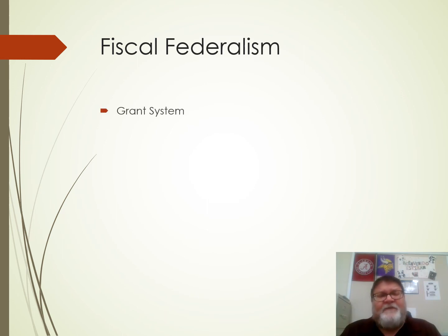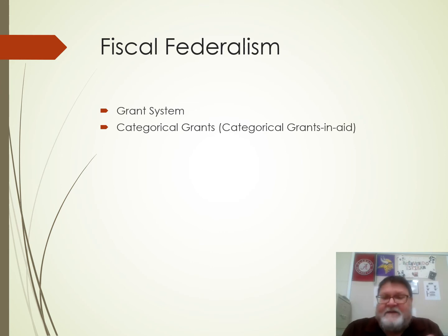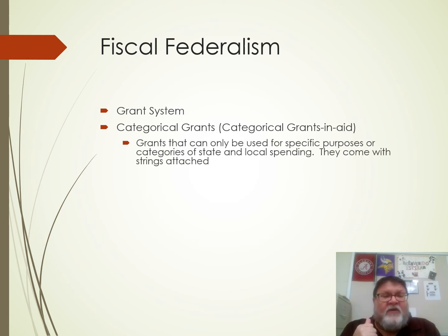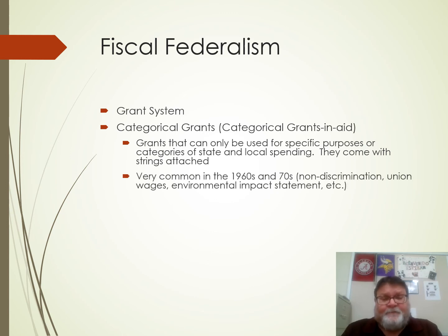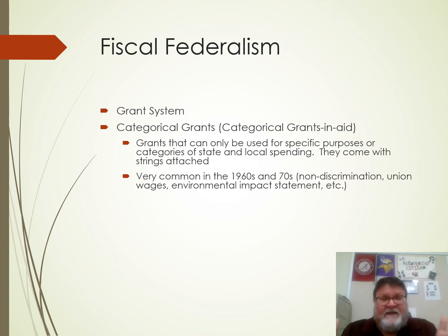Fiscal federalism involves the grant system, and there are two big categories. First is categorical grants, also called categorical grants-in-aid — the grants that really come with strings. They're very specific from the national government to the states: you must use them for these specific purposes in state and local spending. That was very common in the 60s and 70s with strings including non-discrimination clauses, union wages, environmental impact statements, and all sorts of things that states have to follow if they want the money.